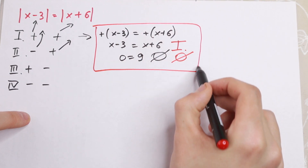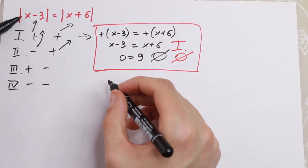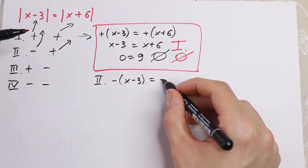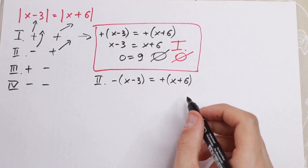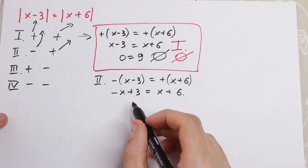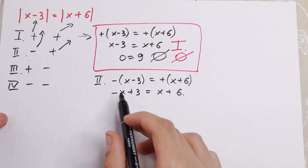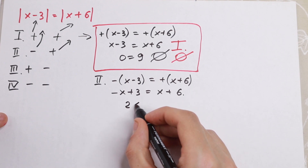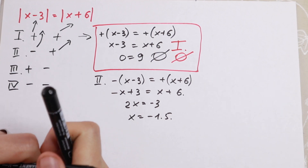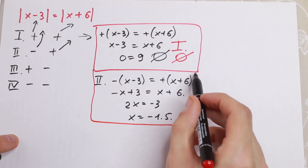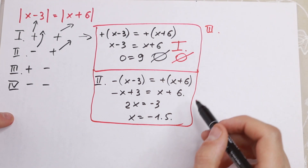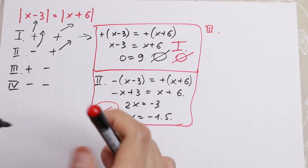Let's solve the second case. The first term has a minus sign, so we have minus x minus 3 equal to the second term with a plus sign, plus x plus 6. If we open parentheses, we get minus x plus 3 equal to x plus 6. Bringing x terms together, we get 2x equal to minus 3, and dividing both sides by 2, we get x equal to minus 1.5. This is our second case — we have an answer. We will check this answer with the absolute value equation later.